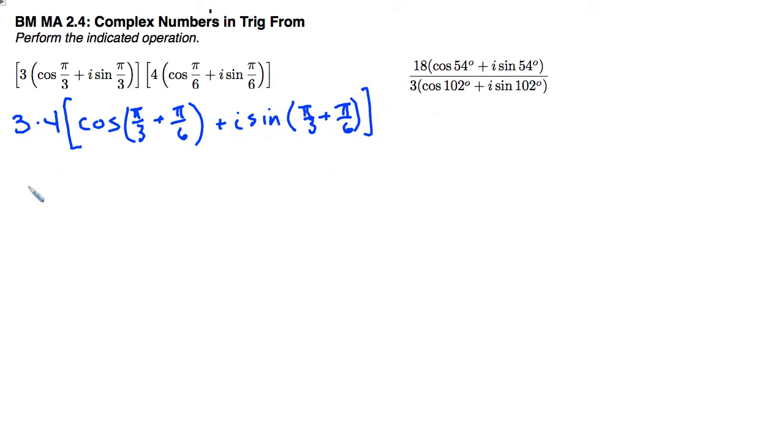And 3 times 4 is 12. Then we have cosine of, now that's pi over 3 or 2 pi over 6 plus another pi over 6. So 3 pi over 6, which simplifies to pi over 2 plus i sine pi over 2.